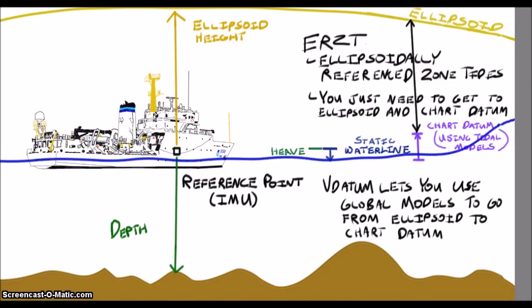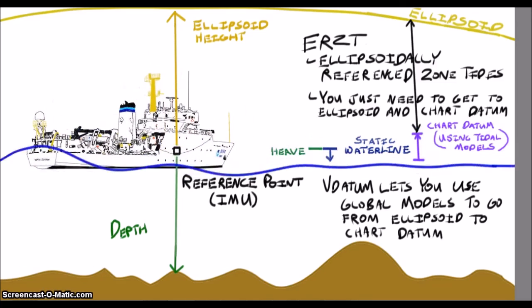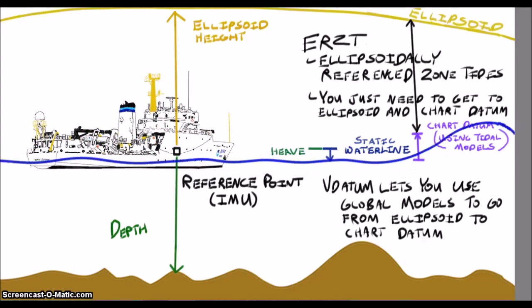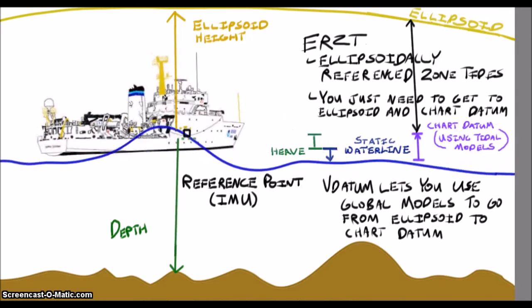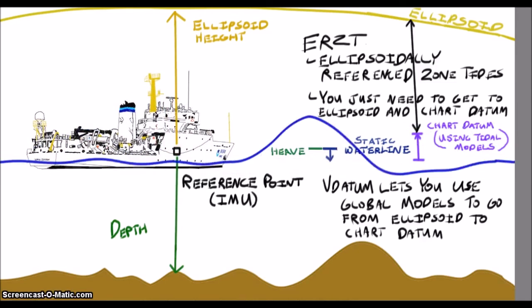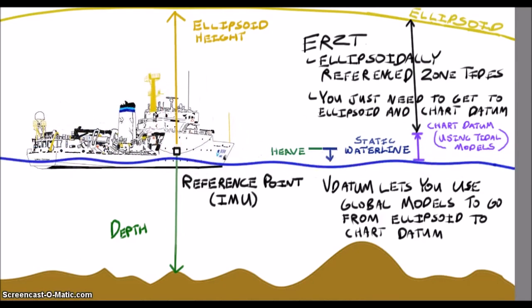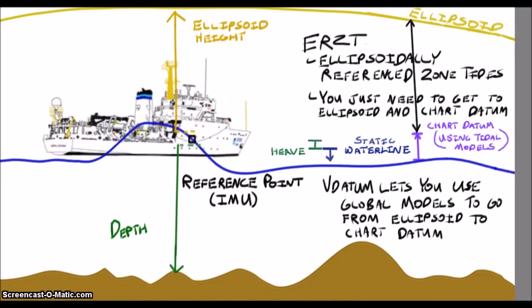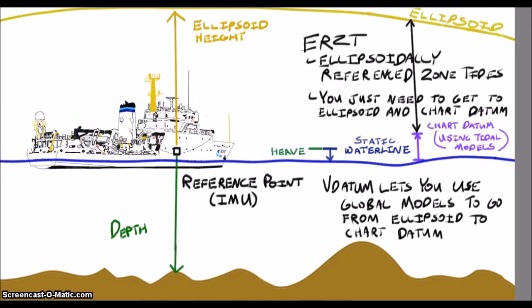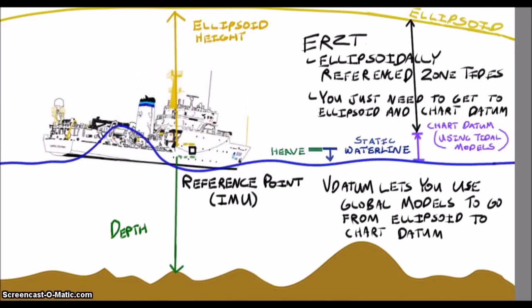So let's wrap this up by looking at a question that I see asked a lot. What's the difference between ERZT and Vdatum? Well, Vdatum is a tool for transforming between datums where we already have well-established relationships. It relies on historical data and geoid models to produce an accurate transformation for your area. ERZT uses your GPS height and water level models like zone tides to transform between ellipsoid and your water levels.